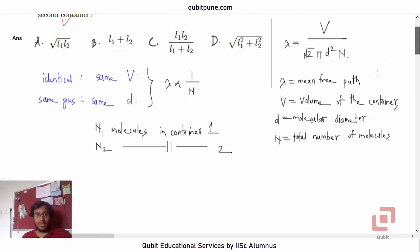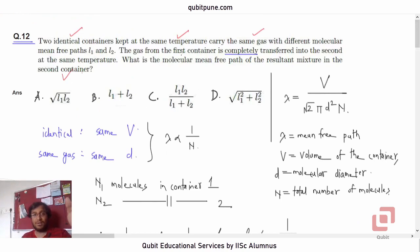Therefore L1 will be inversely proportional to N1, L2 will be inversely proportional to N2, and L3 will be inversely proportional to N1 plus N2, because you are transferring the molecules from the first container to the second.